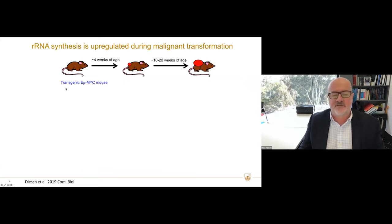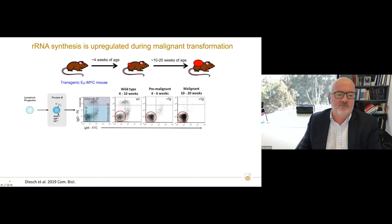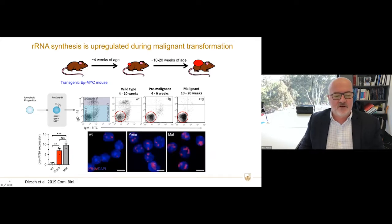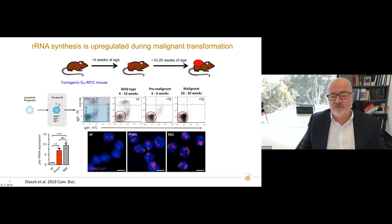RNA synthesis is upregulated during malignant transformation. In a model of MYC-driven lymphoma where MYC is driven by the Eµ enhancer, these mice get significant disease within 20 weeks. Looking at the pro-B cells, there is massive accumulation of malignant cells. This correlates with a significant increase in RNA transcription — probably 95% of all the RNA in these cells is ribosomal — a massive increase visible by RNA FISH comparing wild-type, pre-malignant, and malignant cells.